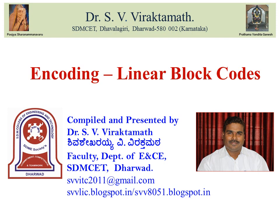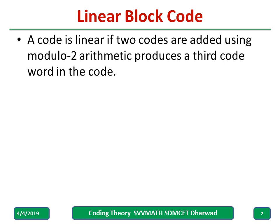Welcome to my channel. In this video we are going to discuss encoding of linear block codes. A code is said to be linear if two codewords are added using mod-2 arithmetic and the result produces a third code which is also in the code. If such a property exists, then we call it a linear block code.